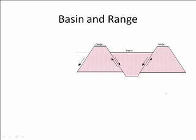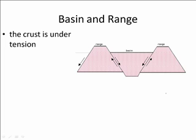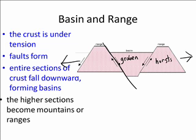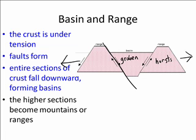Basin and range, however, does not need to be made of horizontal rock, and usually is not. As the crust is under tension and pulling apart, these faults form. These faults are called normal faults. Entire sections fall downwards and will become the basin. Another word for a downdrop block is called a graben. The sections that are left behind and up in the air are the ranges — the mountain ranges — otherwise known as horsts. Graben and horst, or basin and range.